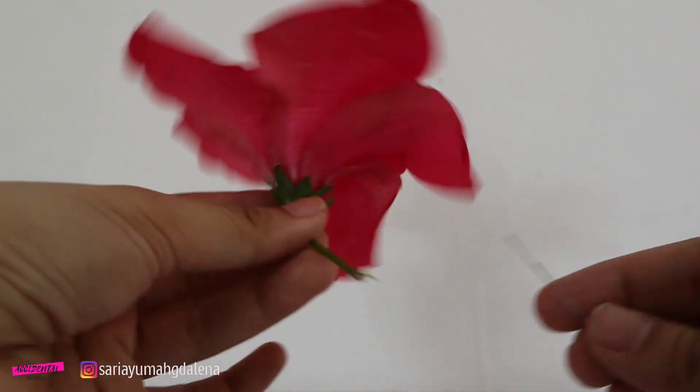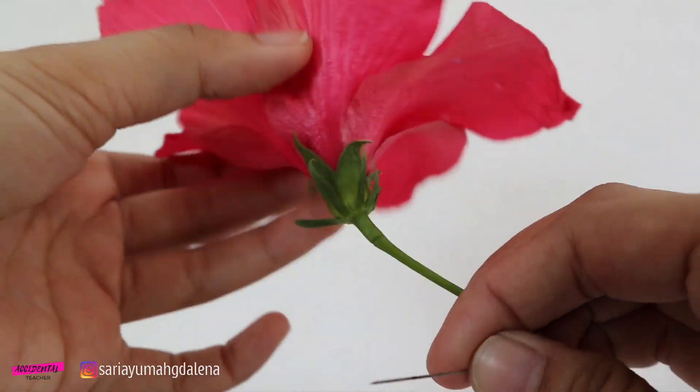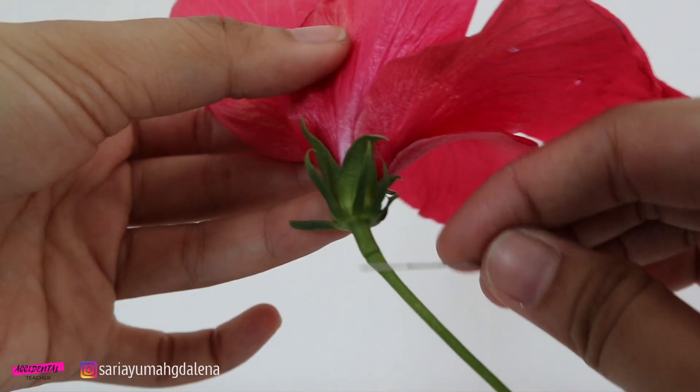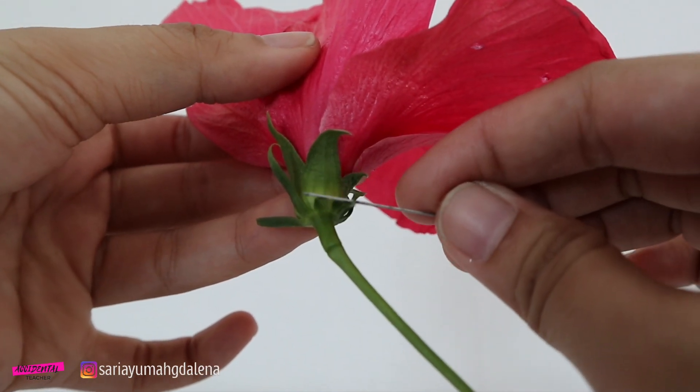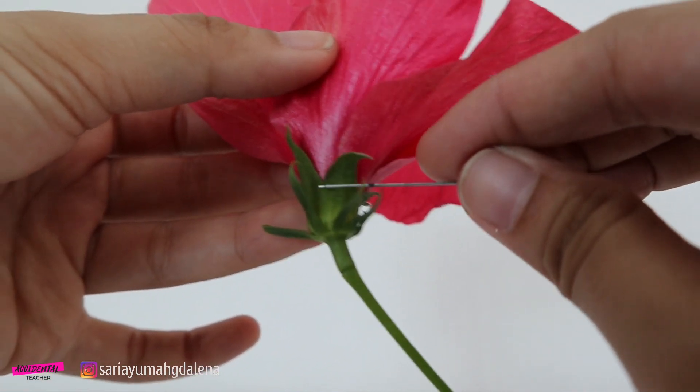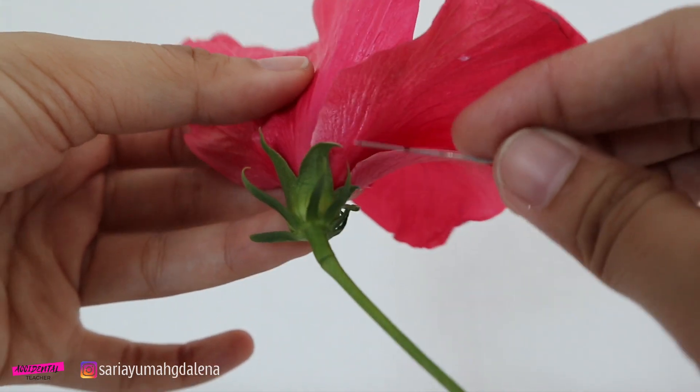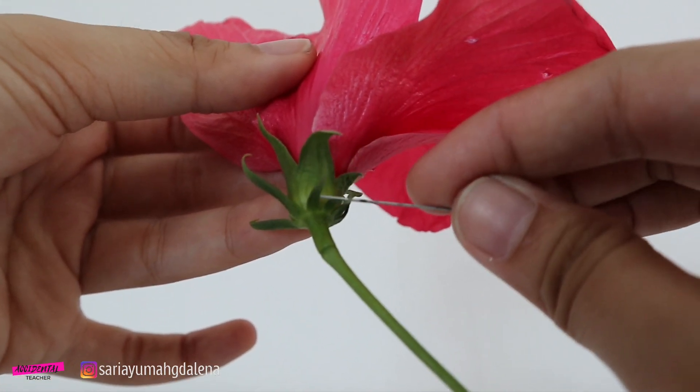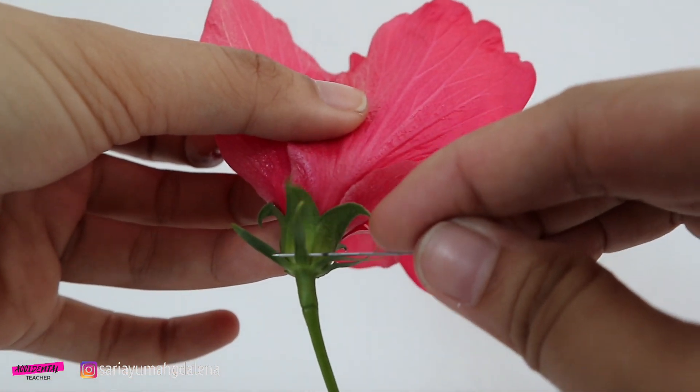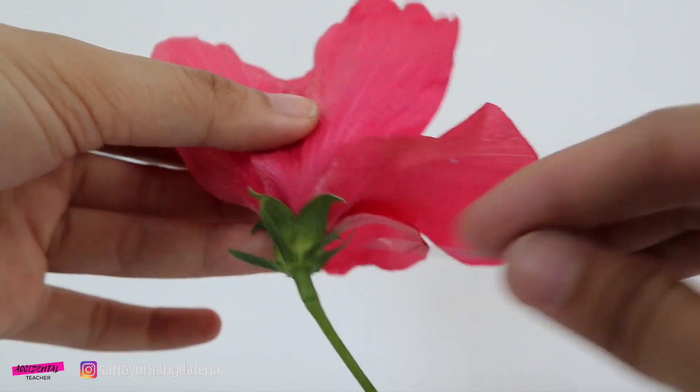Now let us see the detail of this flower by taking off one by one of its part. We are going to start to take off the stem, then the sepals, petals, and then the stamen and the carpal.